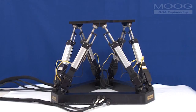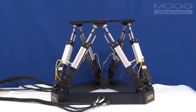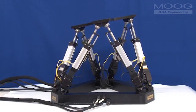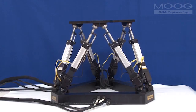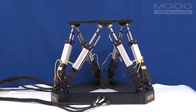A hexapod can position a payload in six degrees of freedom. These degrees of freedom are lateral translations in two directions, vertical or plunge translations, tip and tilt rotations, and finally a rotation about the vertical axis.